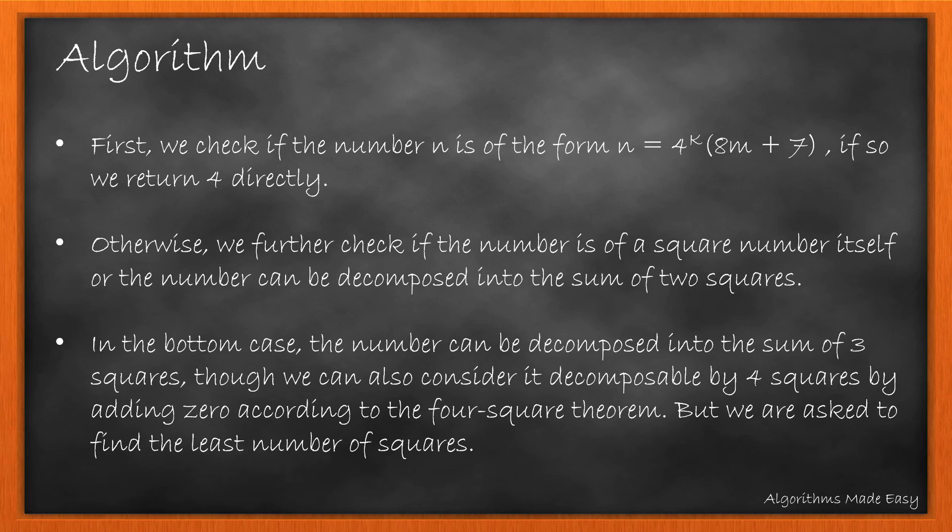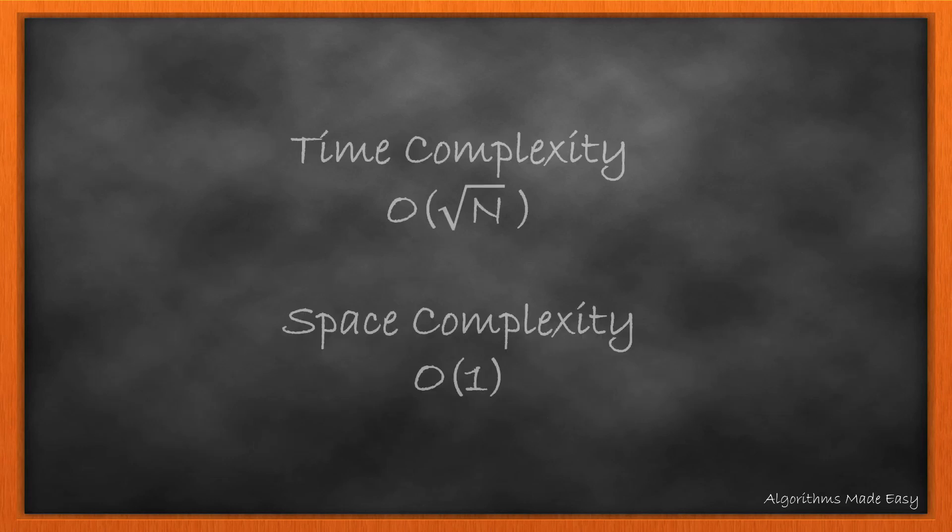Though we can also consider it decomposable by 4 squares by adding 0 according to the 4-square theorem, but we are asked to find the least number of squares. The time complexity is O(√n) while the space complexity is O(1).